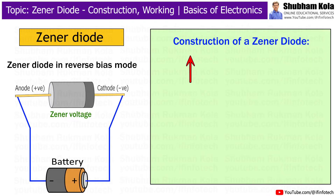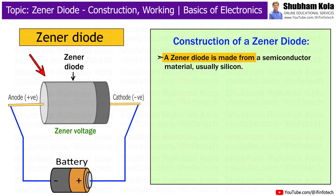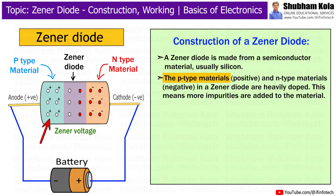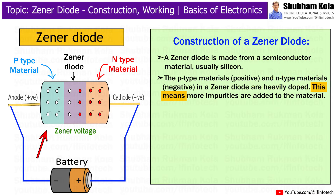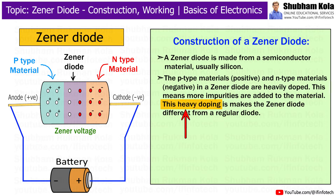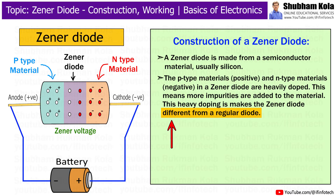Now we'll look at the construction of a Zener diode. A Zener diode is made from a semiconductor material, usually silicon. The p-type and n-type materials in a Zener diode are heavily doped, meaning more impurities are added to the material. This heavy doping makes the Zener diode different from a regular diode.